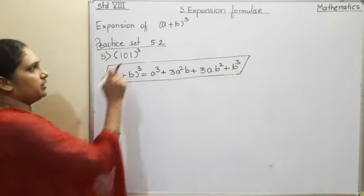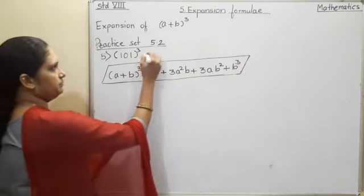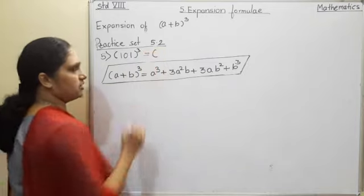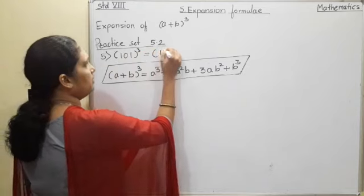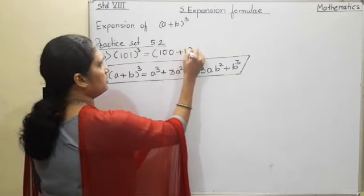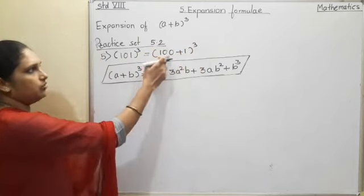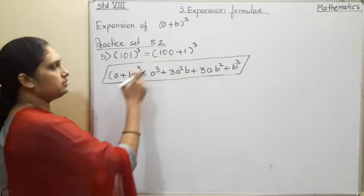Now, we have to do 101³. This number is nearer to 100. So this I will write in the form of (100+1)³. This is our a, this is b.